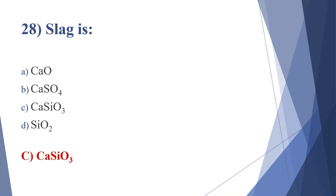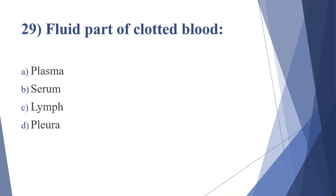Twenty-ninth question: fluid part of clotted blood — option A: plasma, option B: serum, option C: lymph, option D: pleura. Answer is option B, serum.